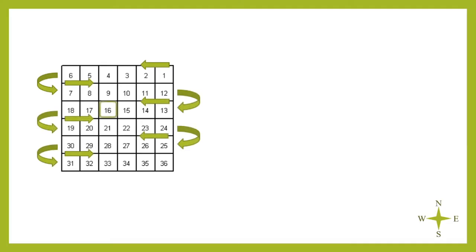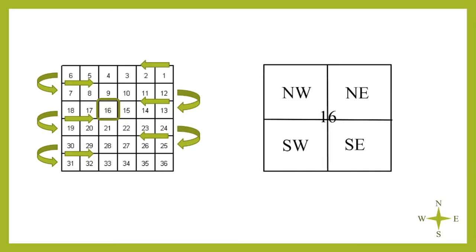When a section is quartered, we refer to each resulting quarter by the directional position, giving the northwest, northeast, southwest, and southeast quarters.